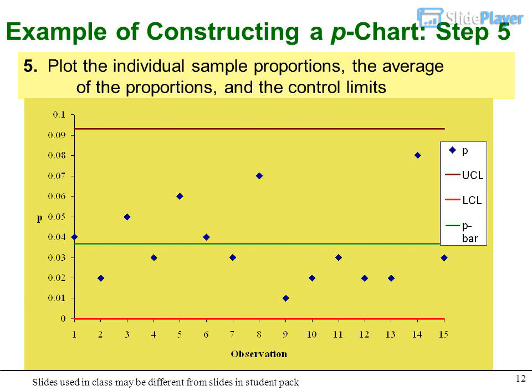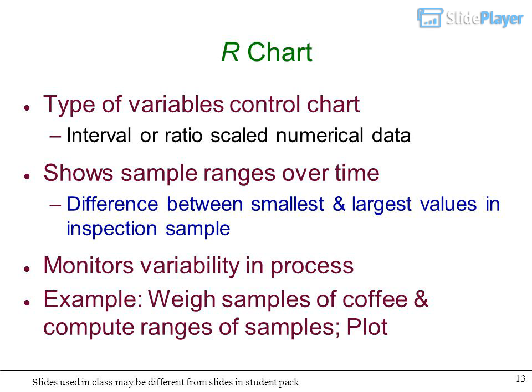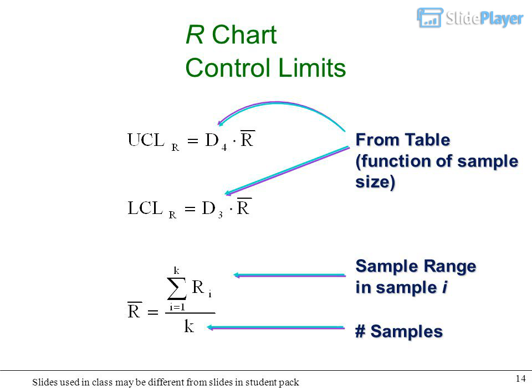R-chart uses interval or ratio scaled numerical data, shows sample ranges over time. The difference between smallest and largest values in inspection sample monitors variability in process. Example: weigh samples of coffee and compute ranges of samples. Plot R-chart control limits from table as function of sample size.